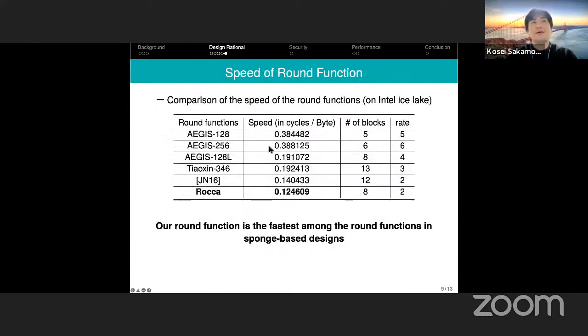Here is a comparison of the speed of round functions. As you can see in this table, our round function is the fastest among these round functions.